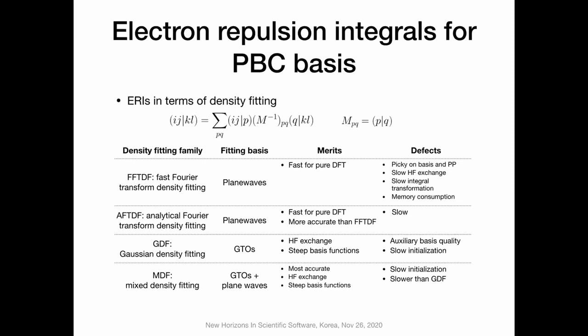The defect is obvious: when we use this trick for more complicated methods, for example including Hartree-Fock exchange, it's really slow. The cost of the Fourier transform is roughly proportional to the size of the system times a large constant. Also, it's quite picky about the basis and the potential, since we have to evaluate things in real space. Due to these defects, we developed other solutions to solve those problems.